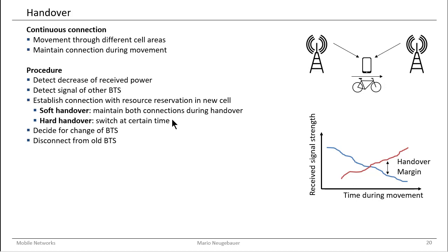Hard handover is the other possibility. Hard handover means that at a certain point in time you switch the connection from the first base station to the other. During the handover phase you monitor the received signal strength. If you see that the decrease is steep enough and the received signal strength from the second base station is much higher, then at that point in time you completely switch to the second base transceiver station for the connection.